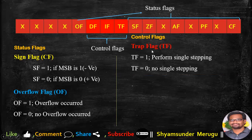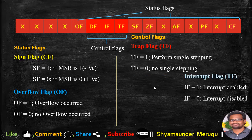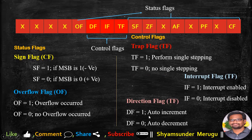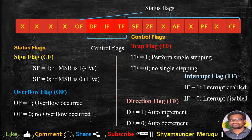Coming to control flags. Trap flag: set to 1 to perform single stepping; set to 0 if no single stepping. Interrupt flag: when set to 1, interrupt is enabled; when reset to 0, interrupt is disabled. Direction flag: when set to 1, auto increment is done — searching from lower address to higher address; when reset to 0, auto decrement is done — searching from higher address to lower address.